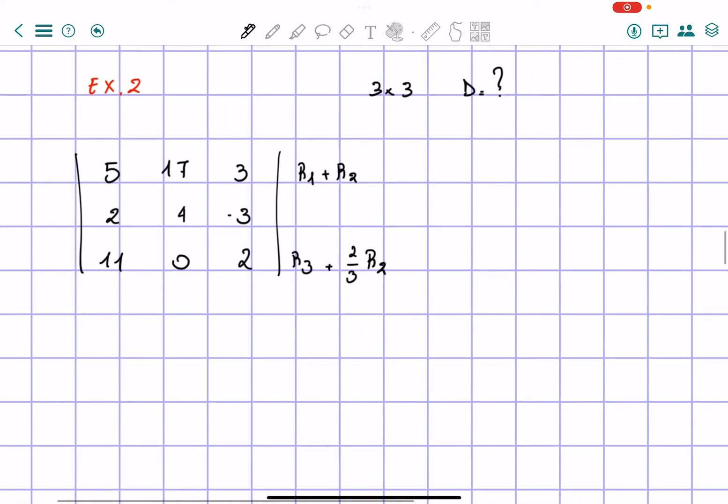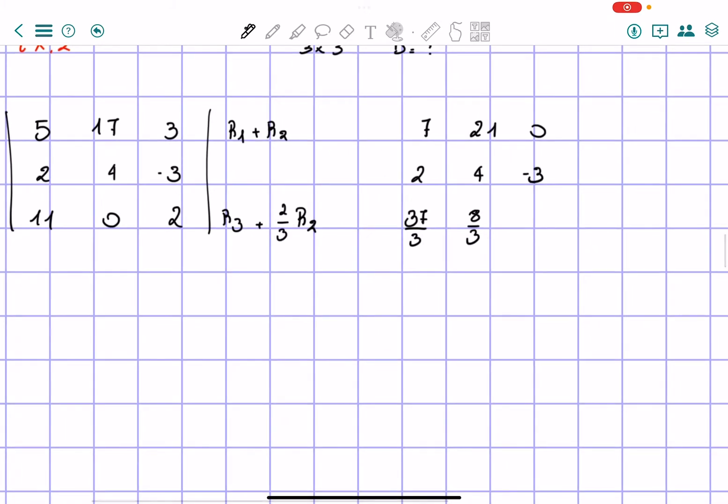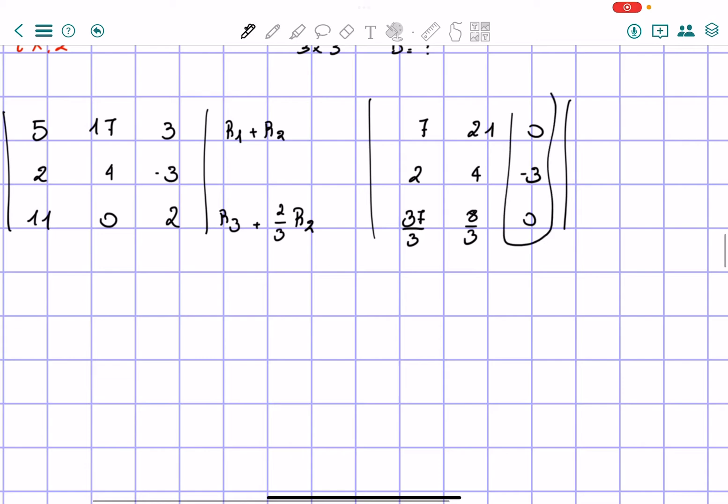So row 1 becomes 7, 21, 0. Row 2 is the same and row 3 is 2 thirds of row 2, so 2 thirds of 4 over 3, and then we have 37 over 3, and 2 thirds of 4 which equals 8 over 3, then we have 0. So as you can see, we already solved this one, it's all zeros.